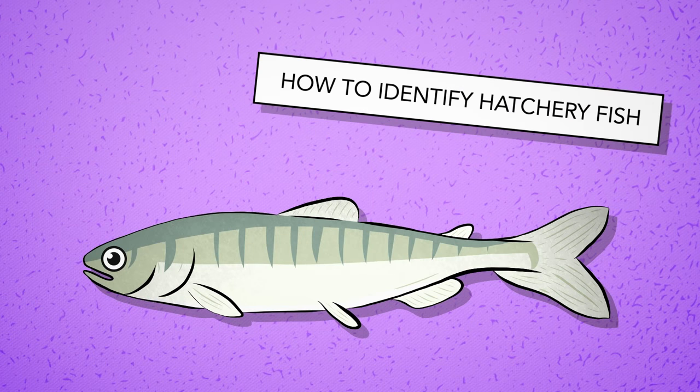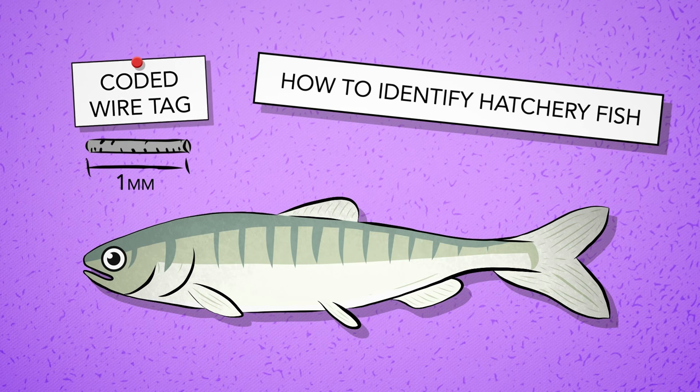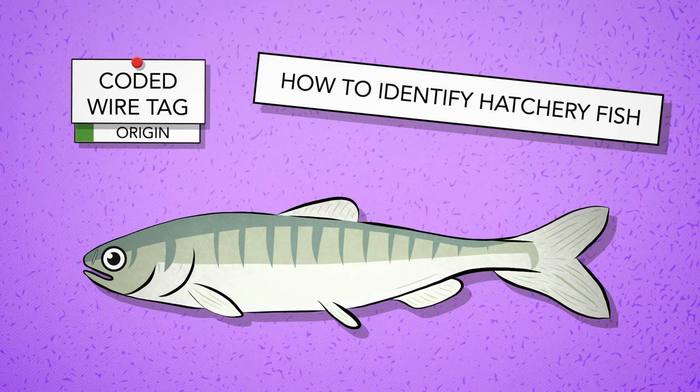Before they're released, hatchery fish have their adipose fin clipped so they can be easily distinguished from naturally spawning stocks. Some fish are also marked with a coded wire tag that helps fishery managers know where the fish go, how well they survive, and where they're caught.